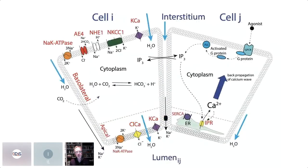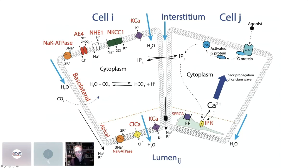How does calcium lead to saliva secretion? In the apical region we get calcium-activated chloride channels; in the basolateral region we have calcium-activated potassium channels, a sodium-potassium-chloride co-transporter, NHE1 (a sodium-proton exchanger), anion exchangers AE4 and AE2, and the ubiquitous sodium-potassium ATPase. Carbon dioxide is buffered making bicarbonate in the cytoplasm as well.